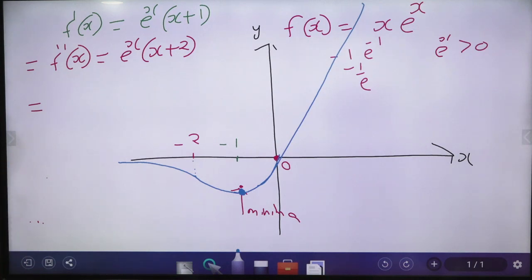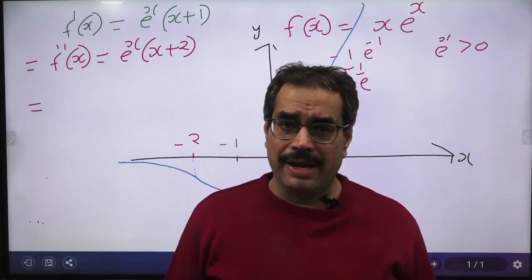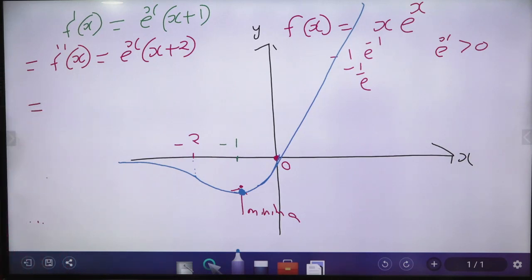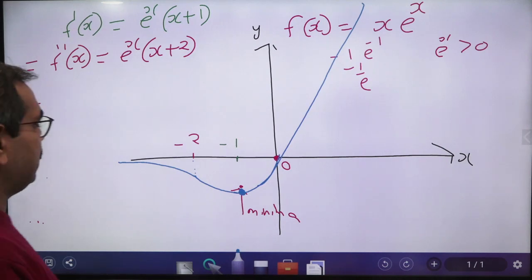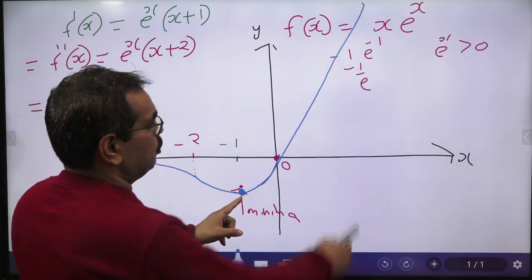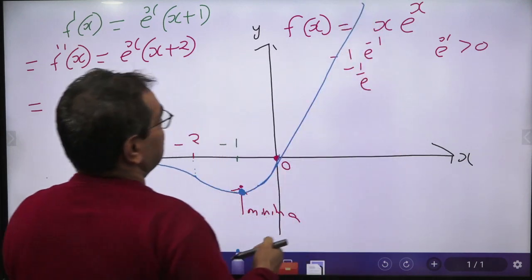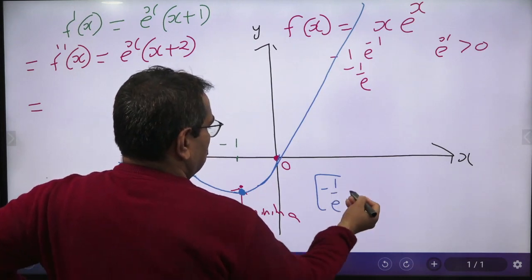This is the complete graph of f(x) = x·eˣ. Mentioning all these points to professors during an exam will give a very good impression and increase your chance of selection. The range of this function: the minimum value is -1/e at x = -1, and it increases to infinity, so the range is [-1/e, ∞).